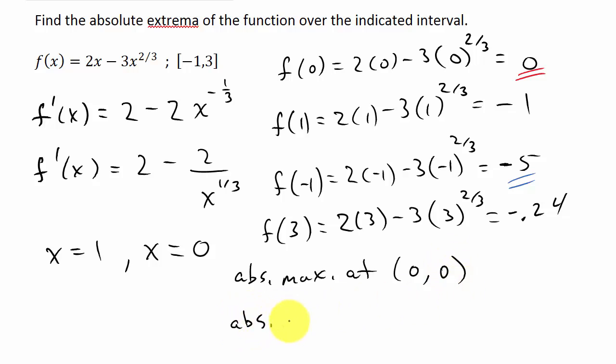And then we have an absolute minimum at x equals negative 1. And then you can see we've already plugged negative 1 into here. Our y value would be negative 5. So there's our absolute maximum and minimum.